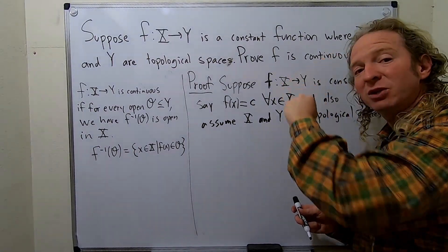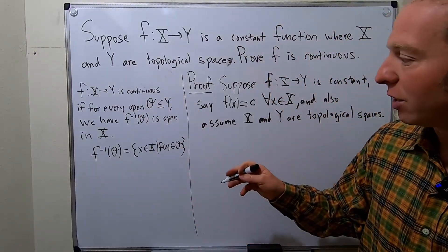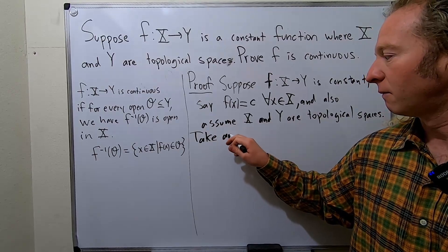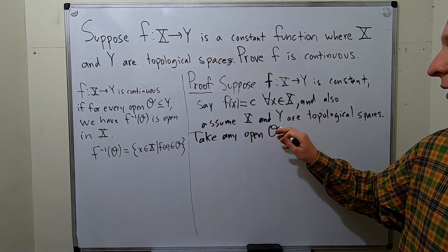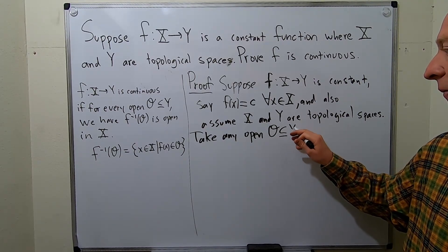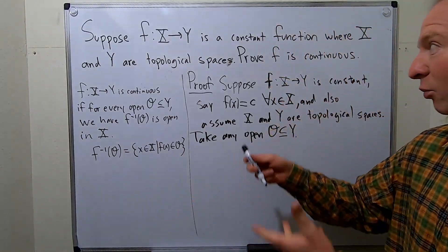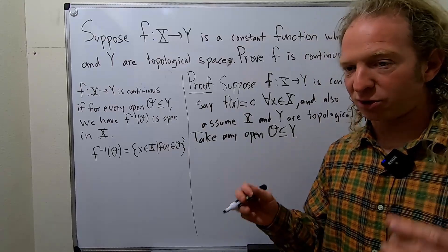So now we have to prove that this is continuous. So we'll start by taking an open subset of y. So take any open O contained in y. And so now we just have to look at this set and show that it is open. And if we do that, we have proven that the function is continuous, which is our goal.